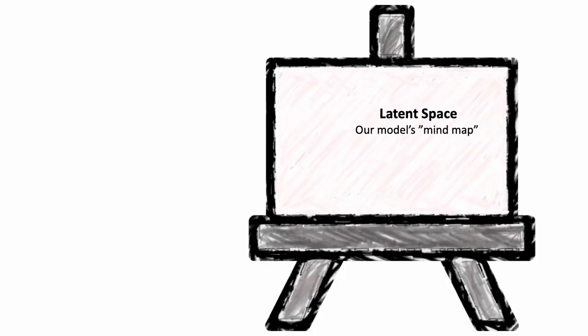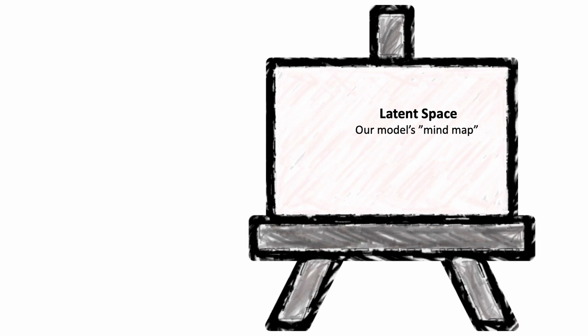Much like us, neural networks input whatever signal they are provided with — visual, audio, text, a mixture of everything — and they internally map each of these inputs into a specific representation that only it understands. Imagine a 2D blank canvas which is the mind of a neural network trained to learn faces of celebrities. It maps every face it sees to a specific coordinate in this canvas.